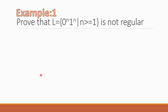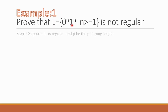First example: Prove that L = {0^n 1^n | n ≥ 1} is not regular. This language consists of strings of n zeros followed by n ones, where n can be 1 or more. We will prove this language is not regular. We start: suppose L is regular, and let P be the pumping length.